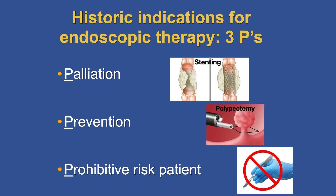Palliation is exemplified by stenting — we are unclogging the lumen with a stent. For example, an esophageal cancer, we put an esophageal stent in. Prevention is exemplified by polypectomy: this is a precancerous lesion, we remove it and we prevent it from becoming a cancer.